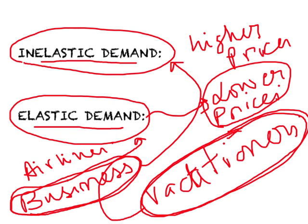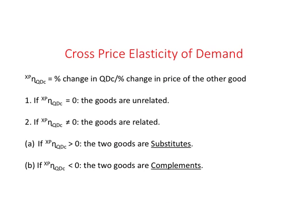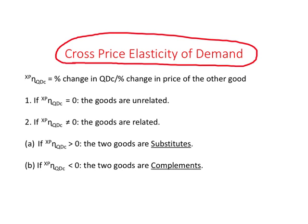Now let us look at some other elasticities. The first one is cross price elasticity of demand, represented as XP, which measures the price of the other good. It measures by how much percent does demand change when the price of the other good changes by 1%. In terms of a ratio, it is percent change in quantity demanded divided by percent change in price of the other good — where the other good could be tea, sugar, or creamer.